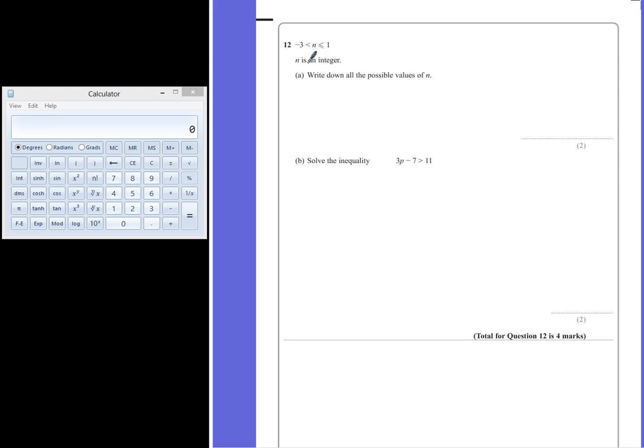Well initially we can see that because n is an integer, we're dealing with whole numbers. The numbers are going to be between negative 3 and 1. So we have negative 3, negative 2, negative 1, 0 and 1.